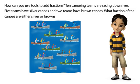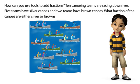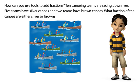How can you use tools to add fractions? Ten canoeing teams are racing downriver. Five teams have silver canoes and two teams have brown canoes. What fraction of the canoes are either silver or brown?